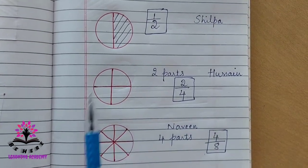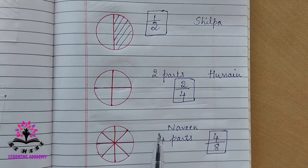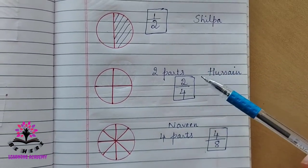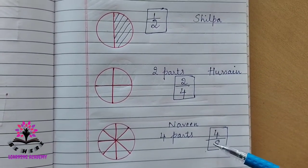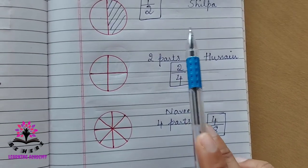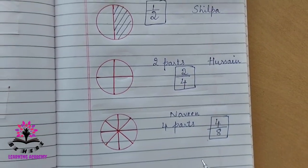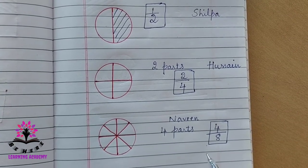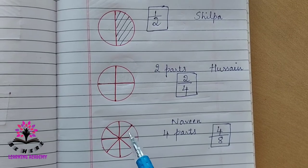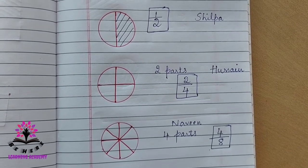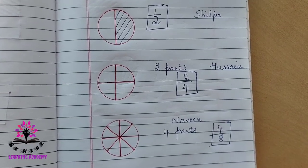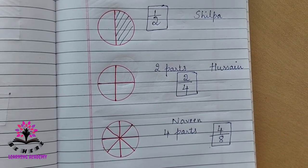Observe the shades of each of them — that is 1/2, 2/4, and 4/8. What do 1/2, 2/4, and 4/8 represent with respect to a whole Dilpasand or the whole fraction? These three are half of the whole, isn't it?